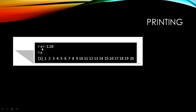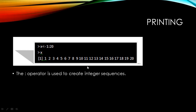If I'm assigning the value for X to be one colon 20, and I want to print X, I type X and hit enter, I get the entire sequence from one to 20. In the square brackets you get one, which simply means that one is the first element in this output. So the colon operator is used to create integer sequences.